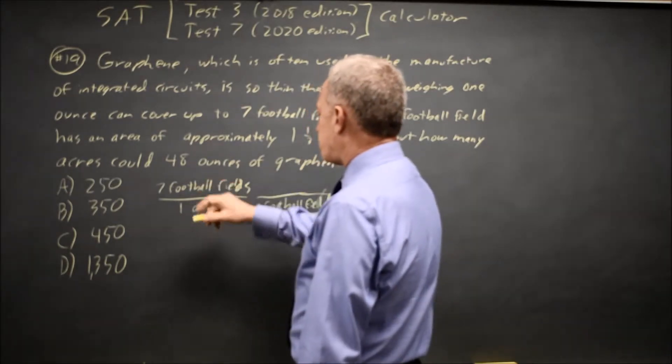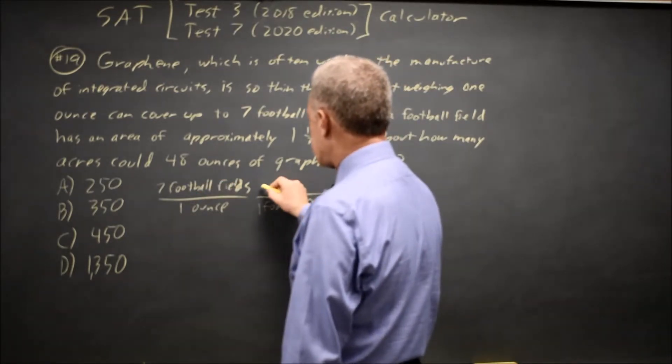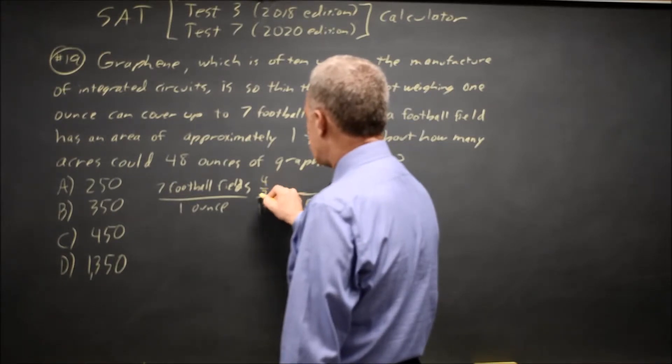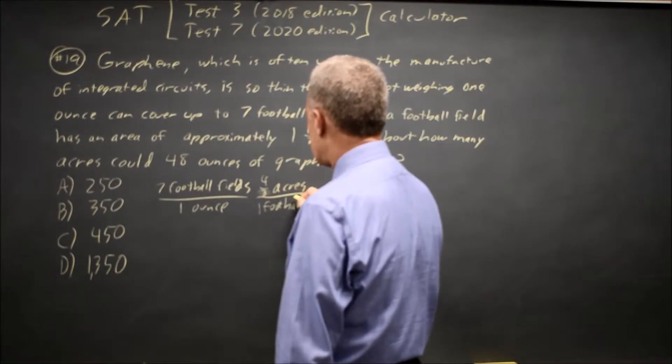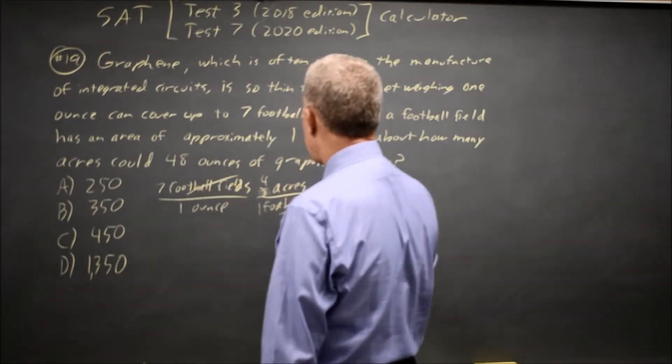And I know that goes on the bottom because I have football fields on the top, and I want that cancelled. So that's four-thirds acres. Football fields cancelled, and I'm left with acres.